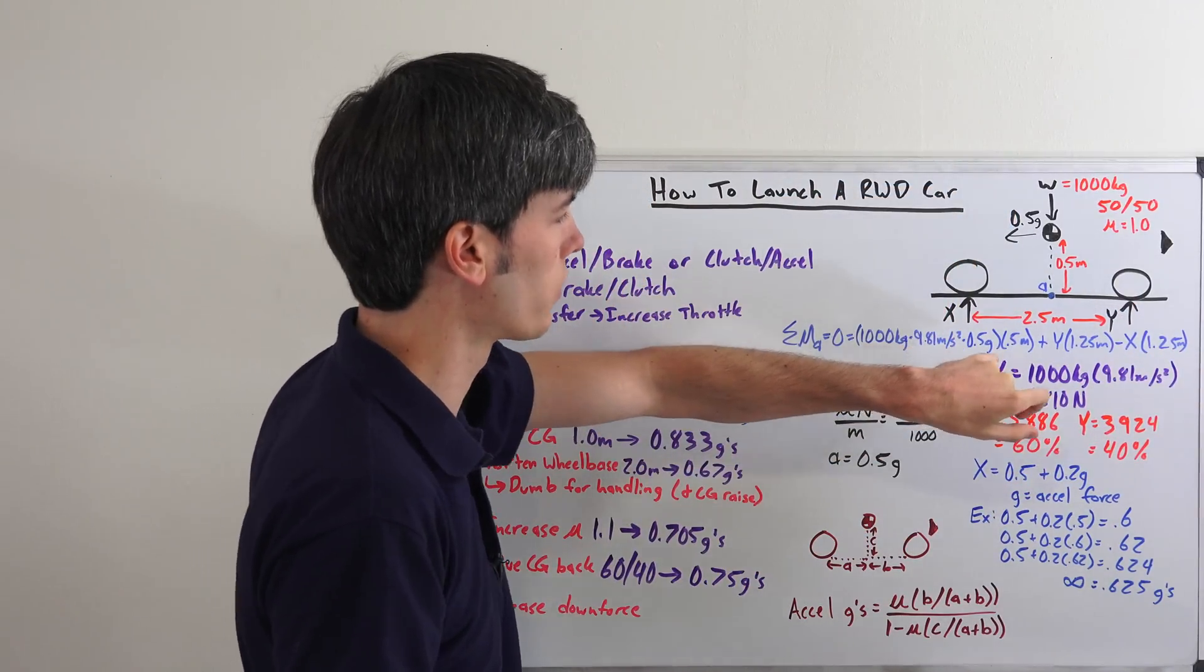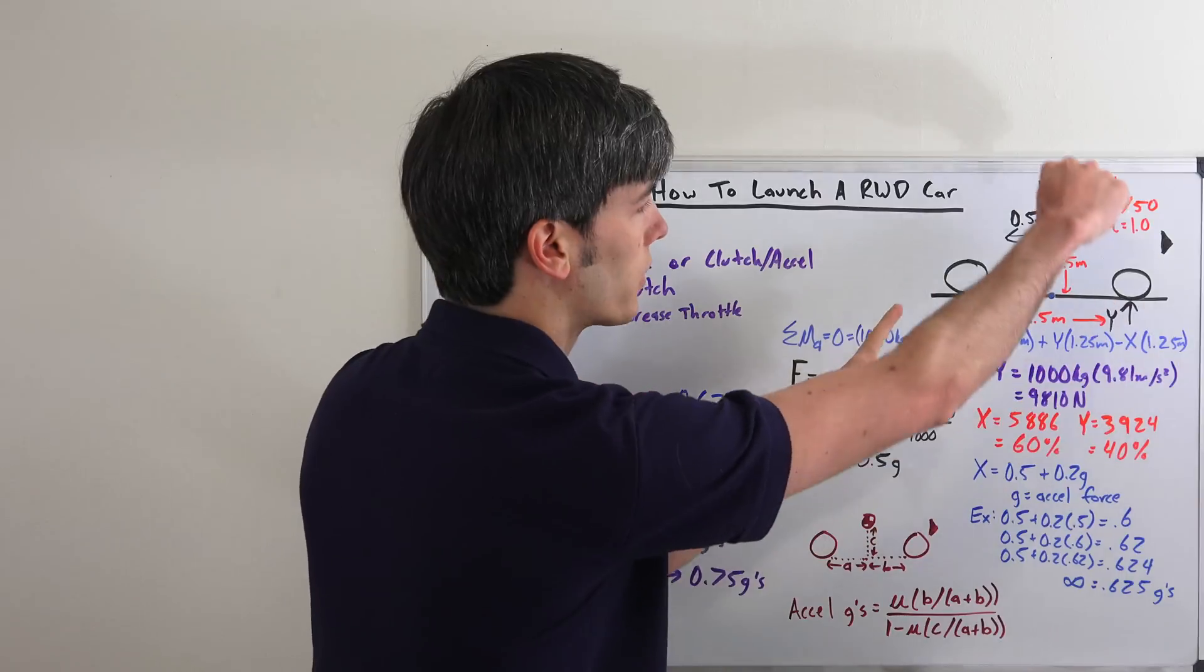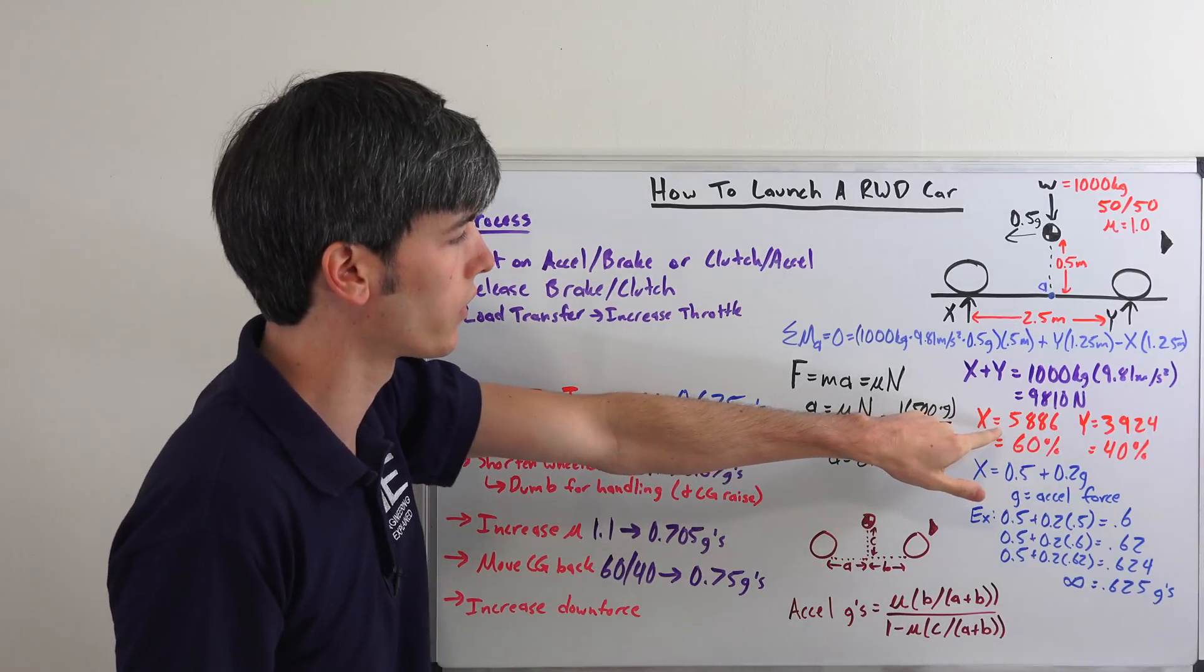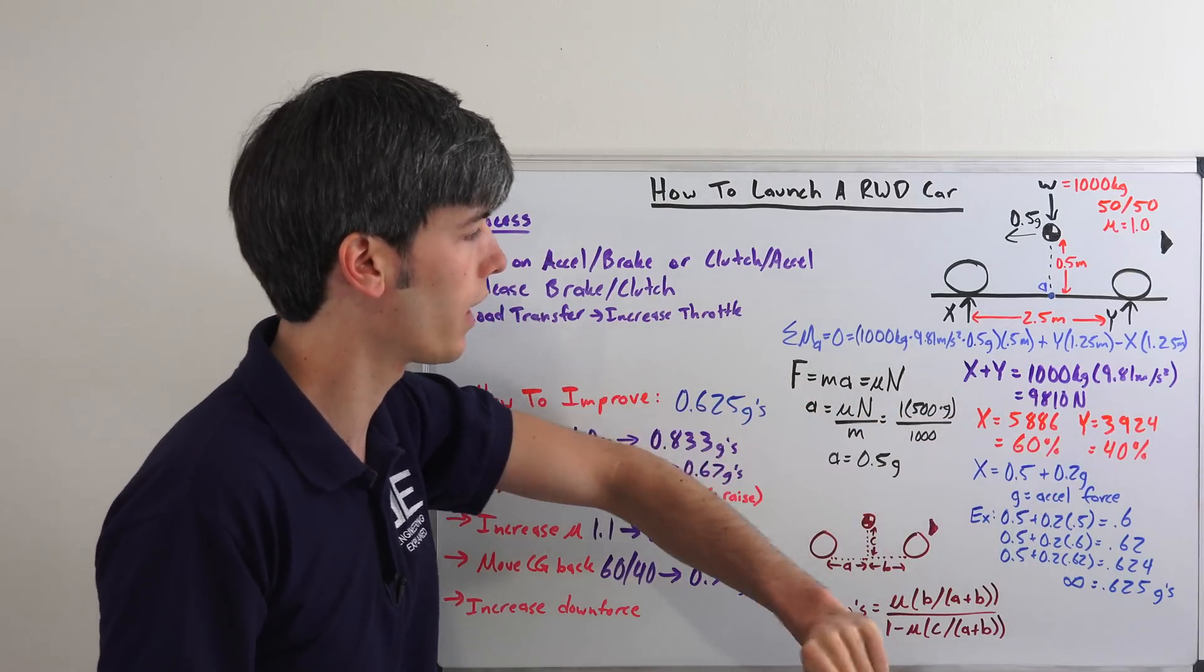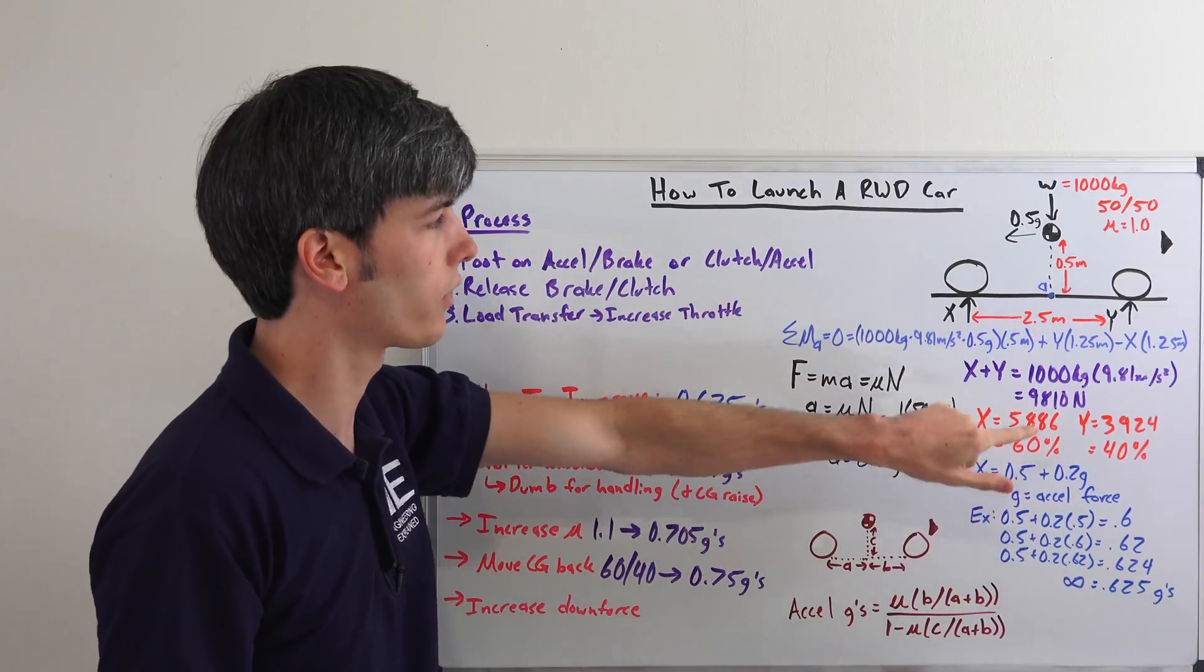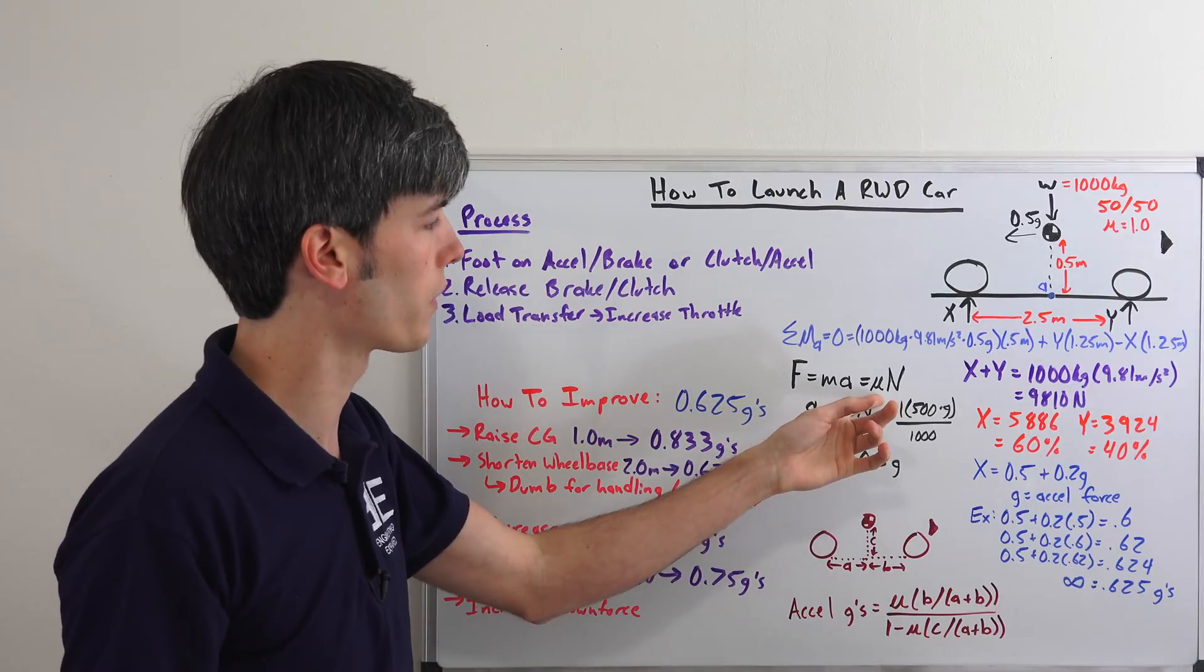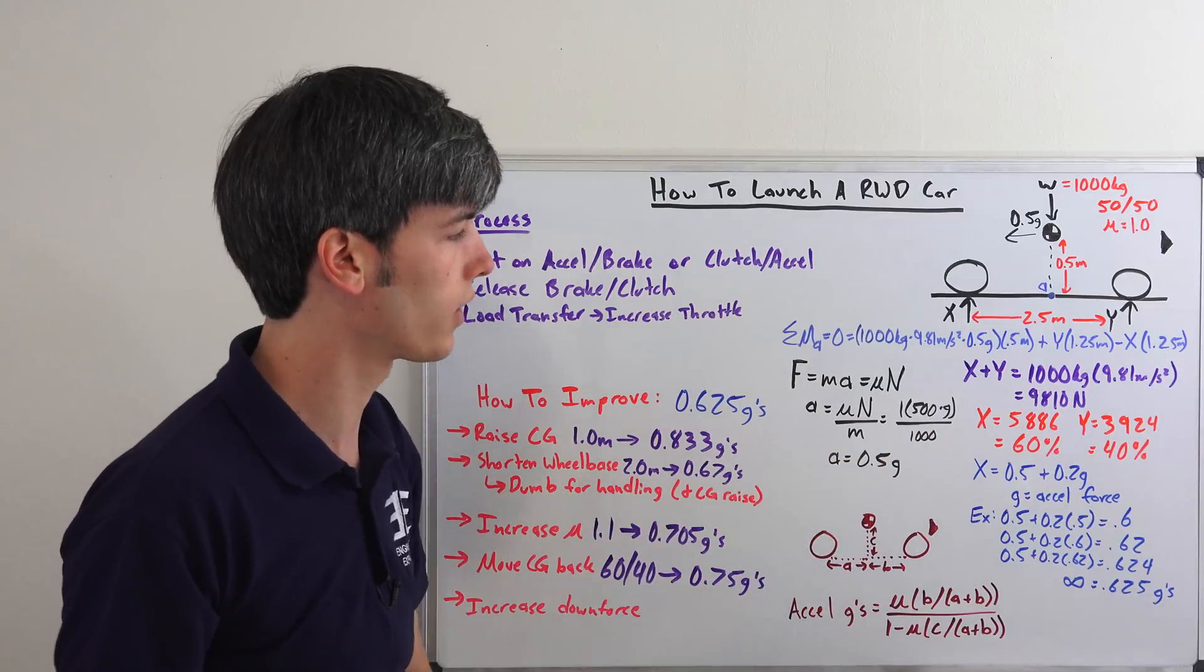And we can create two equations, sum the moments at zero. And then we can, of course, say that x plus y must equal the weight of the car. And then you can solve for x and y in that equation. So I've solved those here and that gives us x is going to be 5,886 newtons. And then y is there. So x is going to be 60% of the weight of the vehicle, the load. And so that means you have 60% load transfer. And if you have 60% of the load there with the gravity, the coefficient of friction being one, then you can accelerate at 0.6 g's.